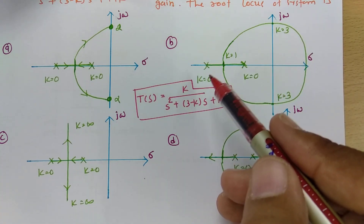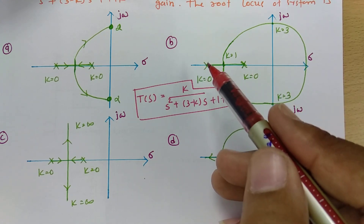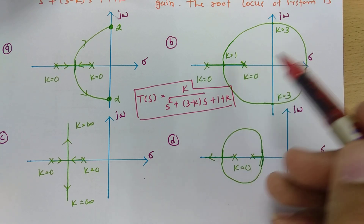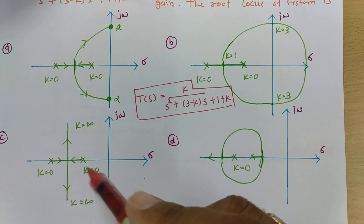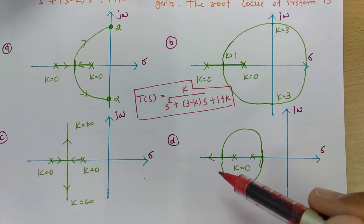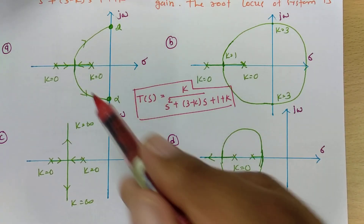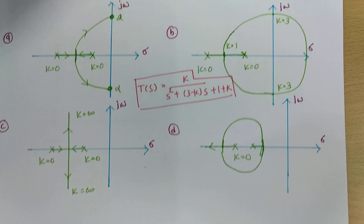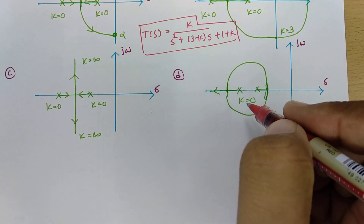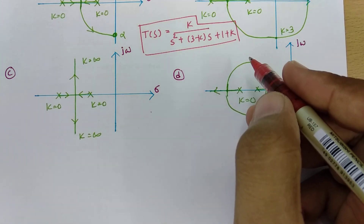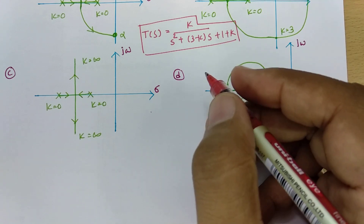The pole positions are given at specific values of k: at k equals 0, at k equals 3, and at k equals infinity. We need to check these. By placing values of k into the transfer function, we can find the characteristic equation and identify what roots we get.